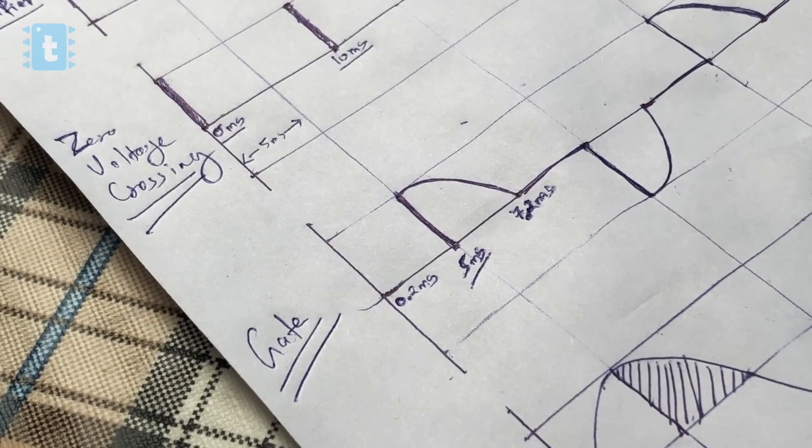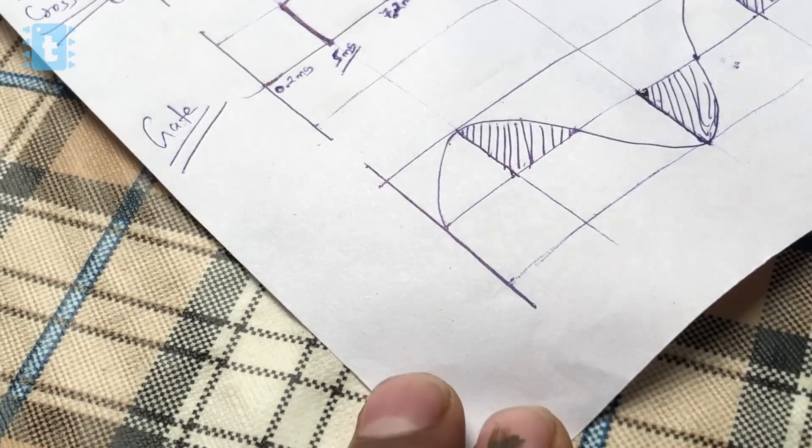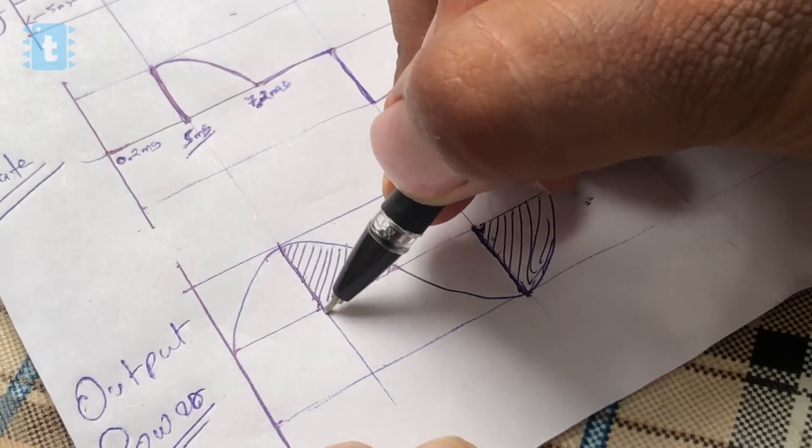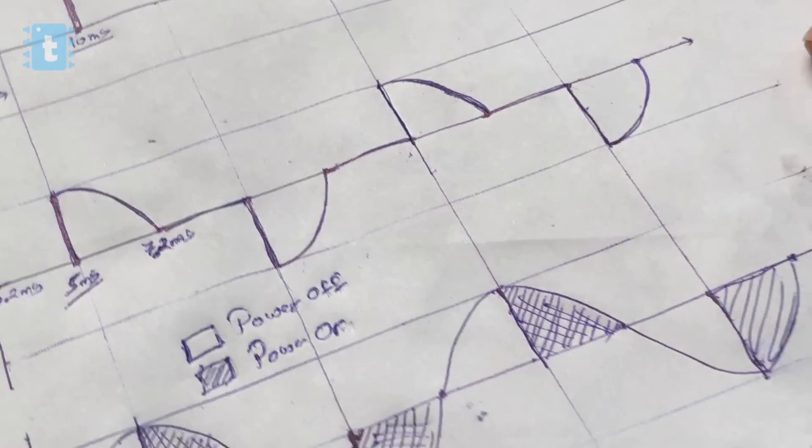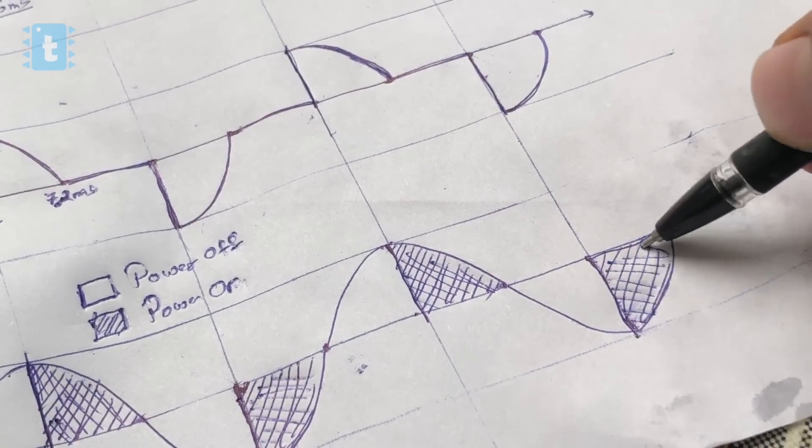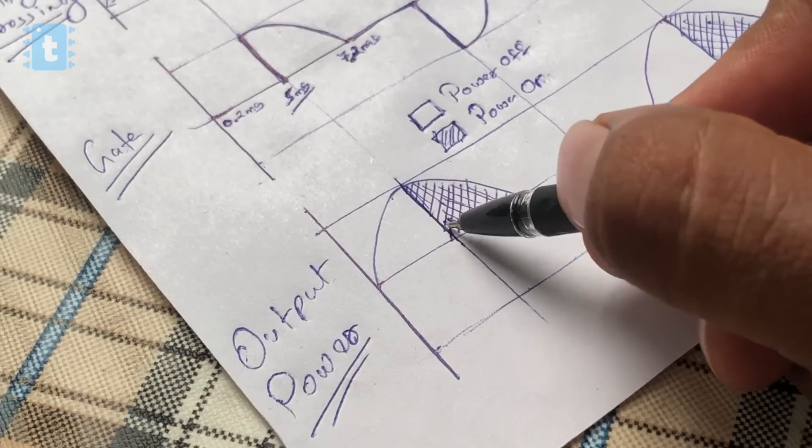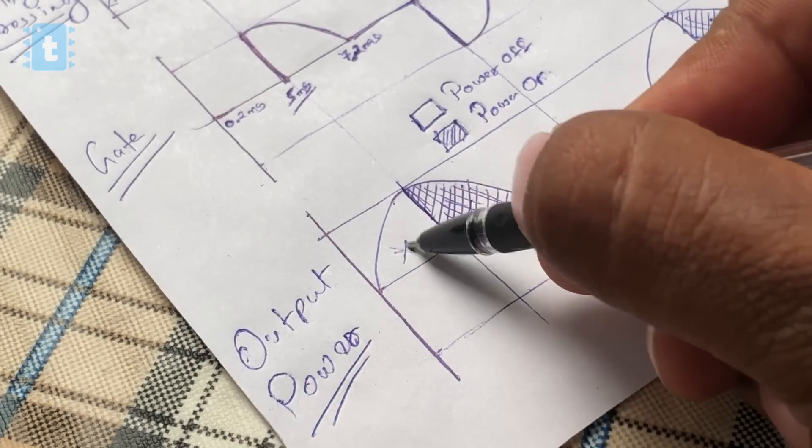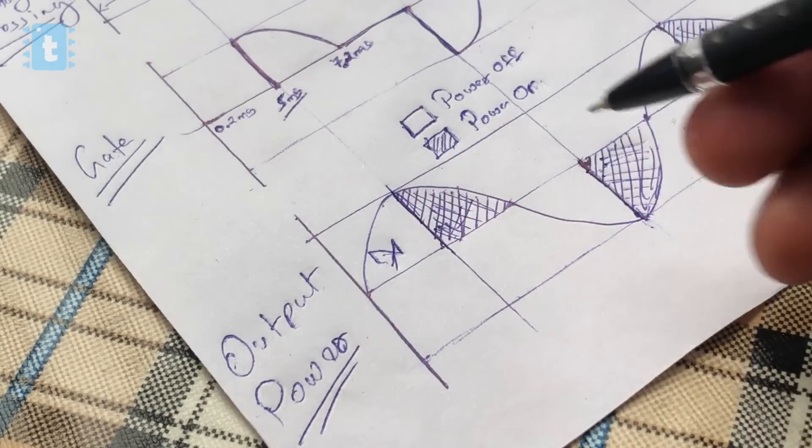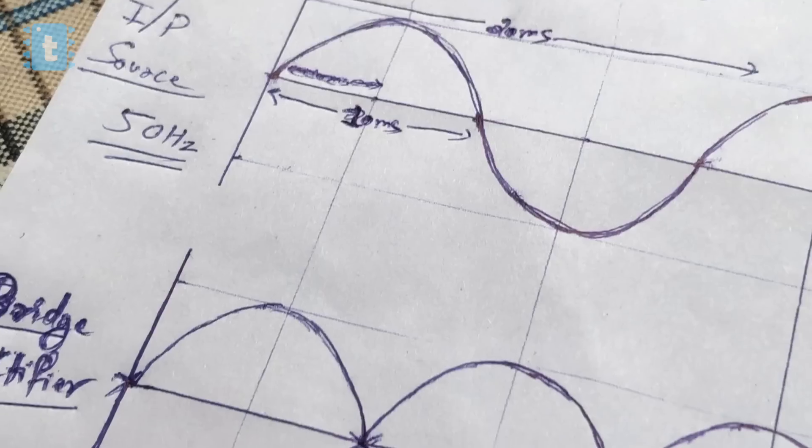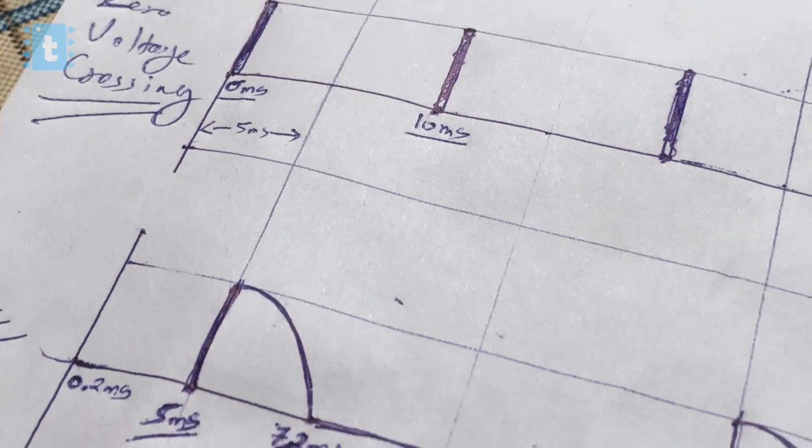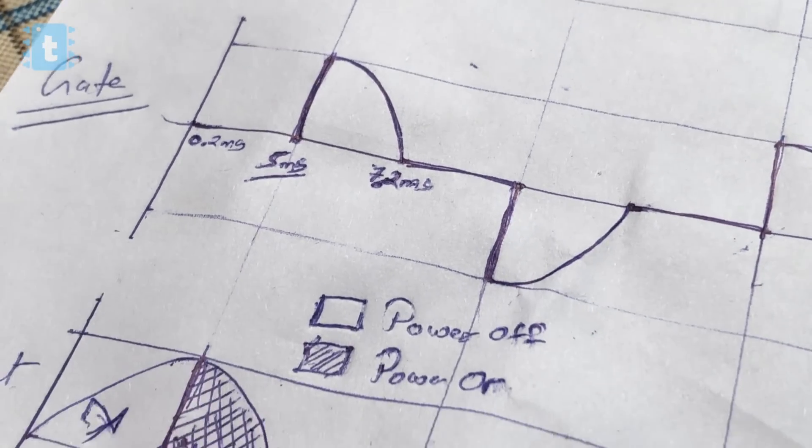With this our bulb will only get half power from the input and it will glow at 50% brightness only. Likewise we can choose any values between 0.2 to 7.2 millisecond using the potentiometer and can adjust the output power accordingly. Logic for this particular thing is written inside this code which is pretty simple to understand.